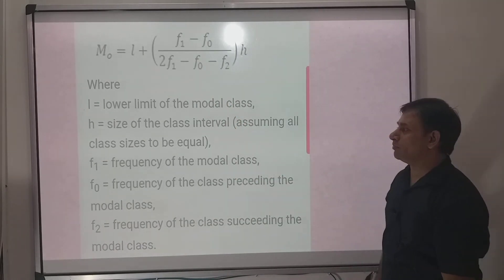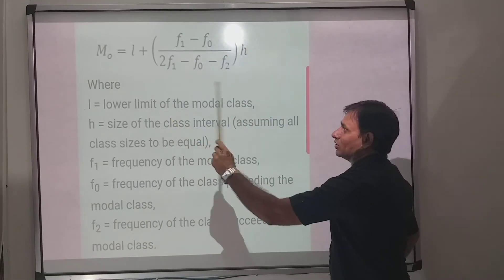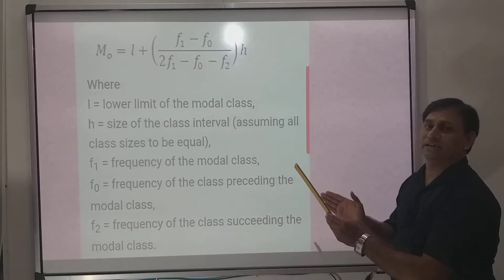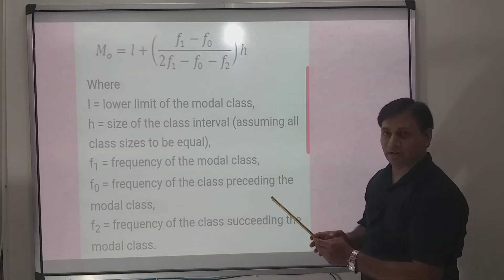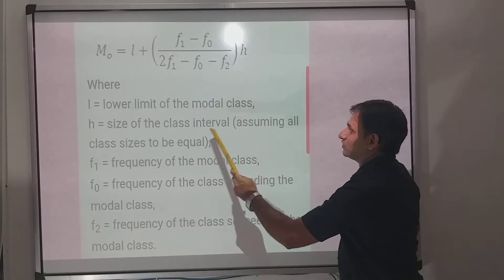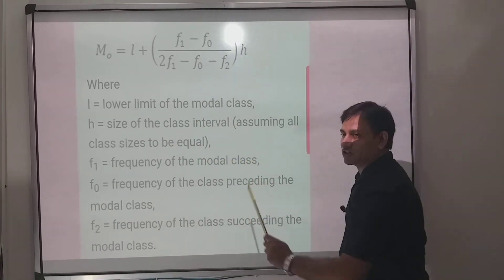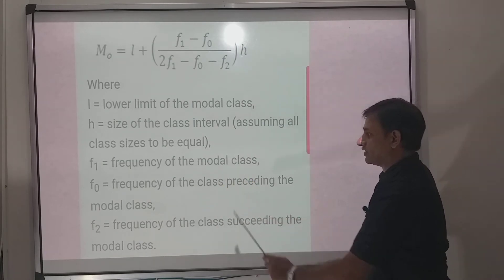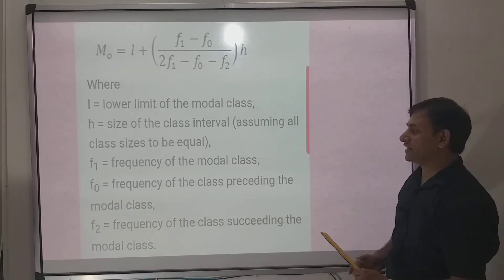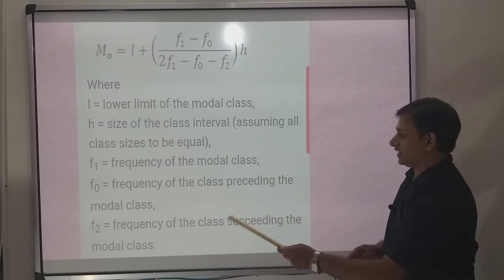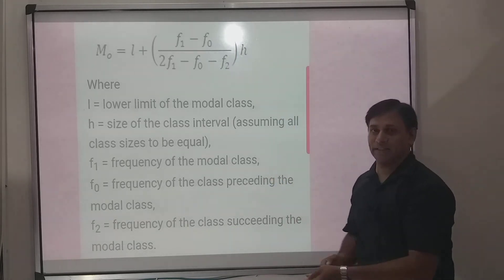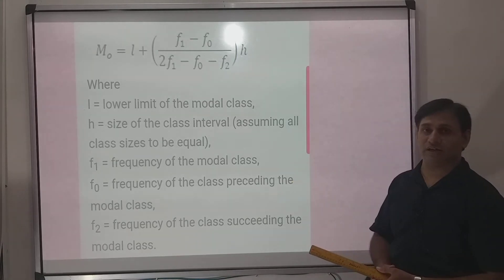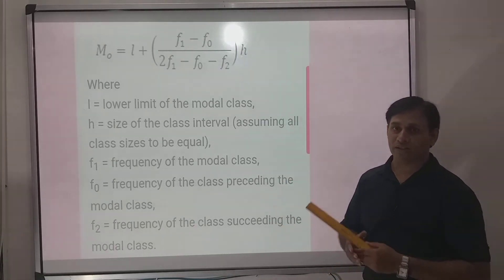Mode is equal to l plus f1 minus f0 upon 2f1 minus f0 minus f2 into h. Where l is lower limit of the modal class, that is the class with the most frequencies. h is size of the class interval. f1 is frequency of the modal class. f0 is frequency of the class preceding the modal class. f2 is frequency of the class succeeding the modal class.